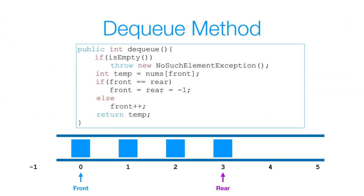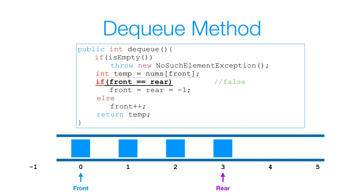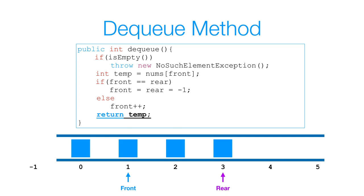Now let's look at the dequeue method. First I check if my queue is empty — if it is, I throw a new NoSuchElementException since there are no elements to remove. If the queue is not empty, I store the data at the front index in a variable called temp so I can return it. Next I check if front equals rear, which means there's exactly one element; in that case I set front and rear both back to negative one. Otherwise, I simply increment front by one index, and then return the temp data.